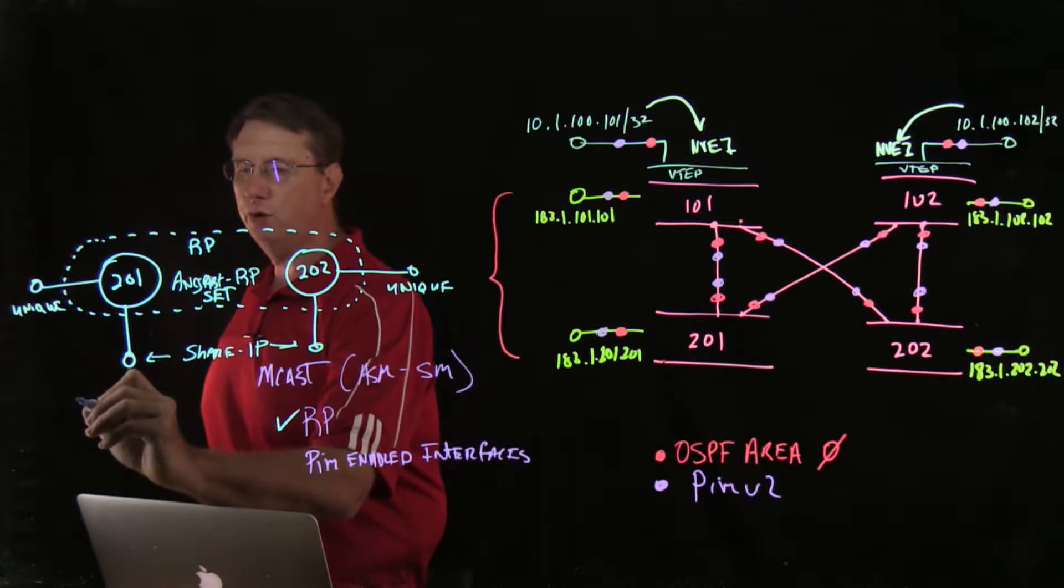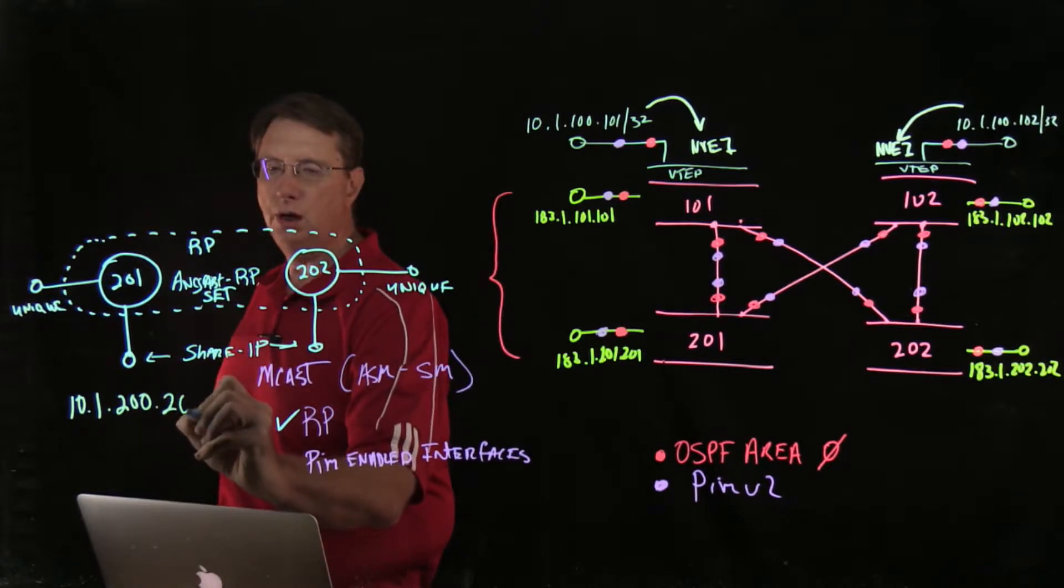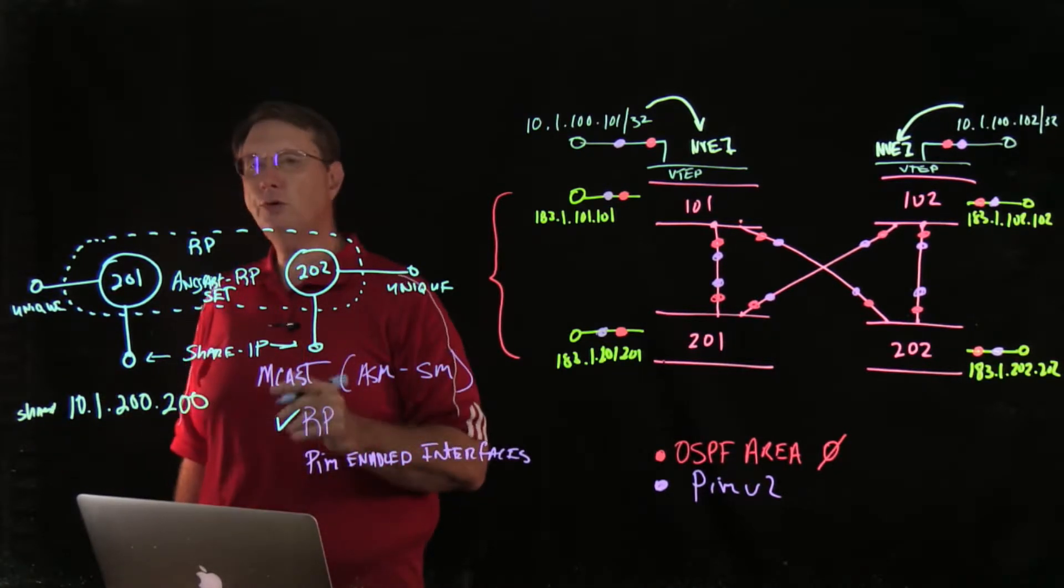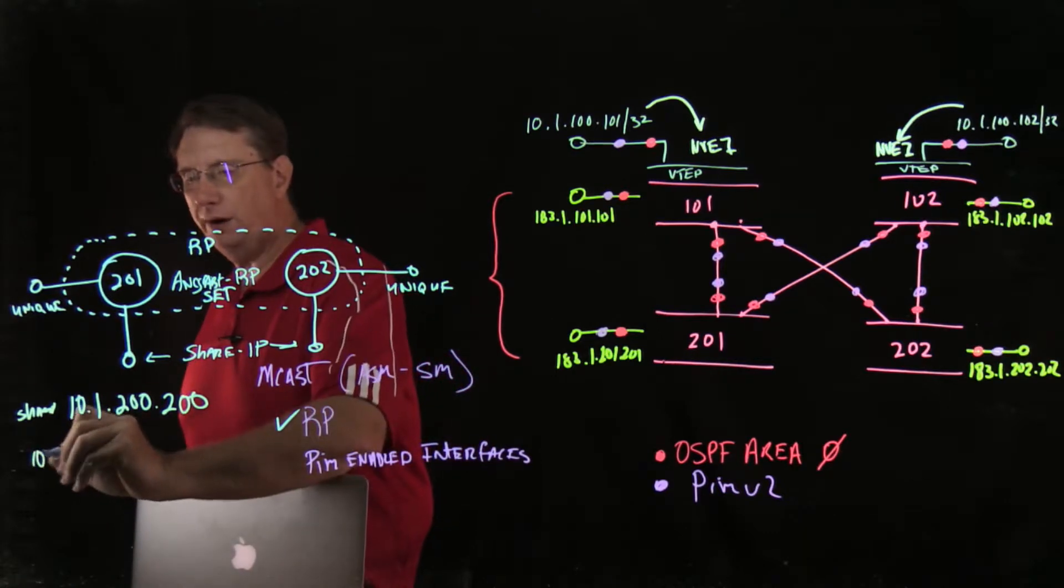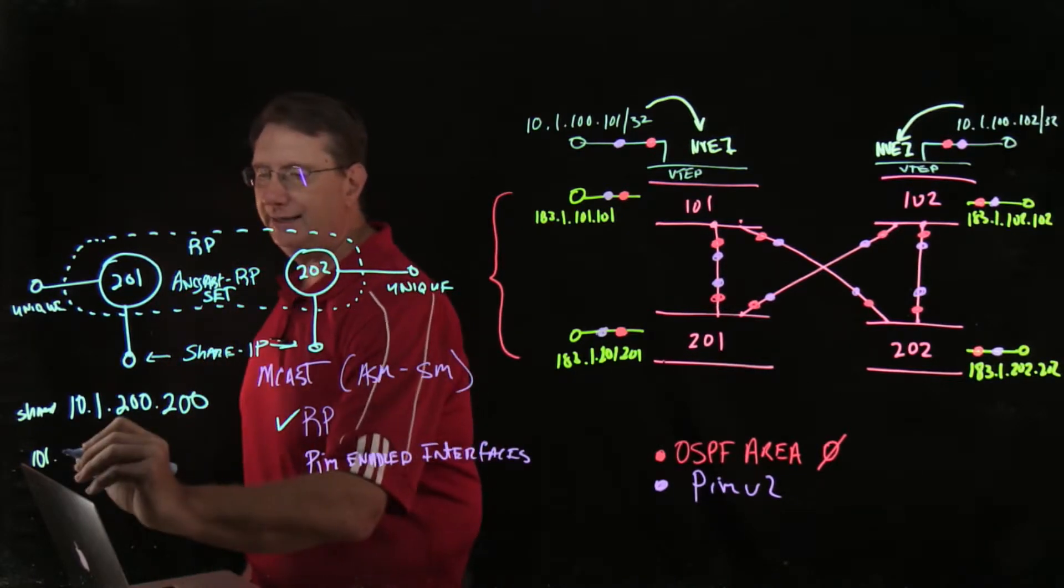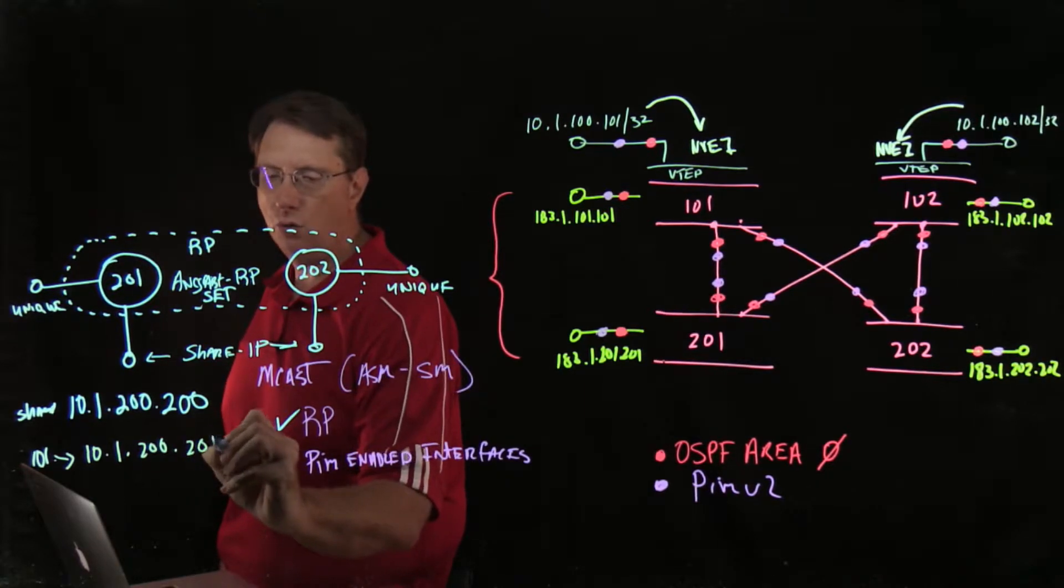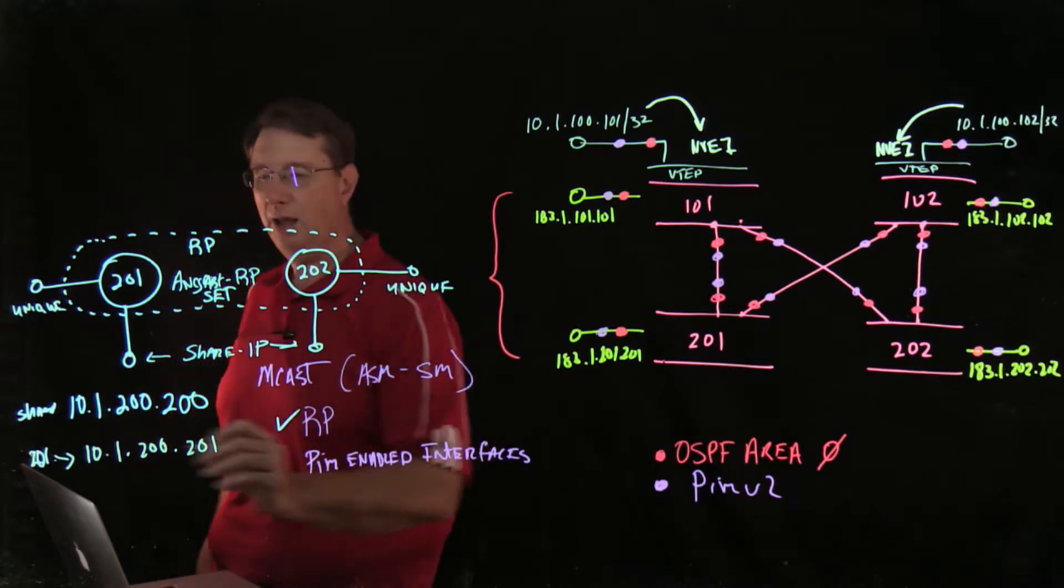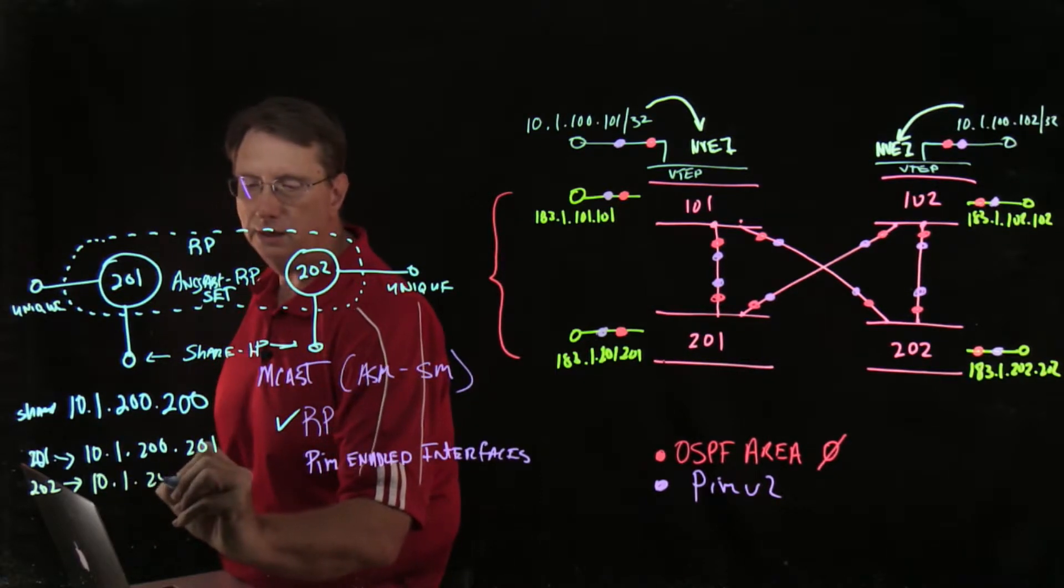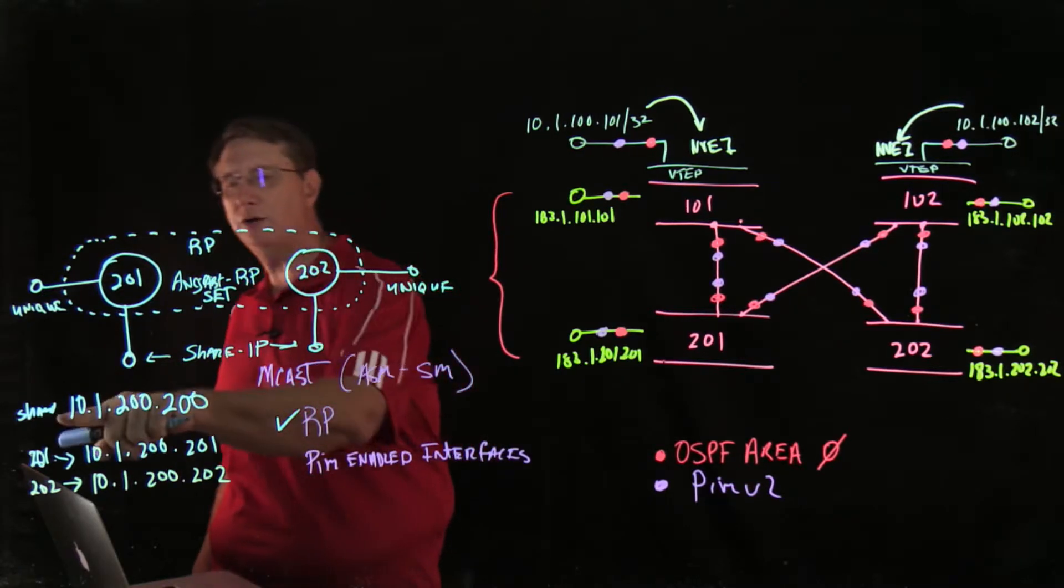So the shared address will be 10.1.200.200. That's going to be my shared address. I'm going to create two unique addresses. One for SPINE201 and it's actually going to be 10.1.200.201. And then we'll create one for SPINE202. It will be 10.1.200.202. So here are my two unique addresses. Here is going to be my shared.